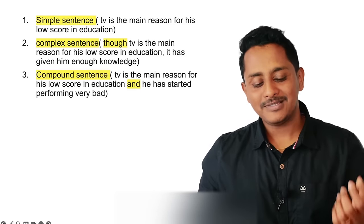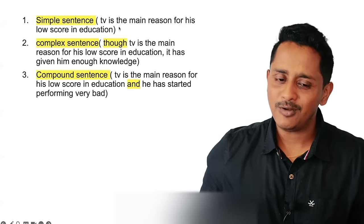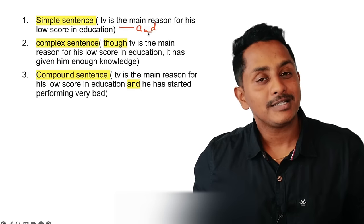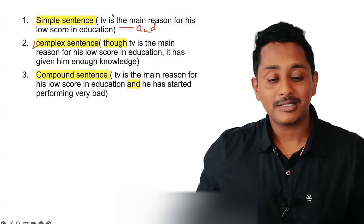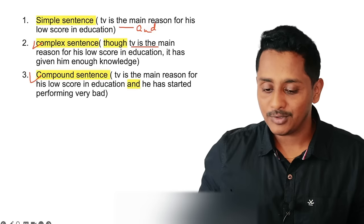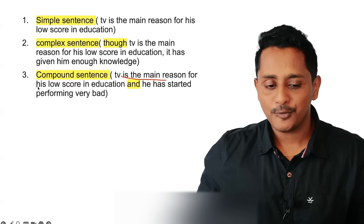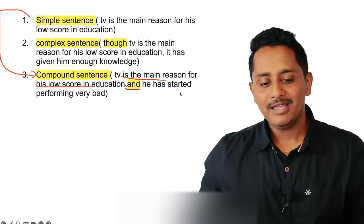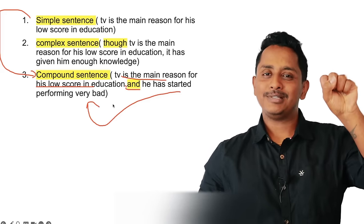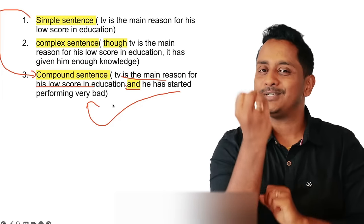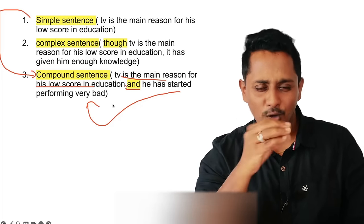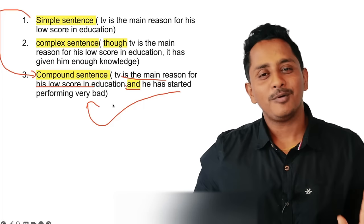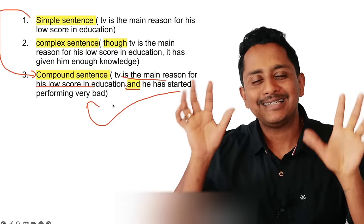Anything that does not include any connectors is a simple sentence — for example: 'TV is the main reason for its low score in education.' There is no 'and,' 'but,' 'or,' 'so' — those are connectors called FANBOYS: For, And, Nor, But, Or, Yet, So. If you use a FANBOYS connector to join two simple sentences, it becomes a compound sentence.